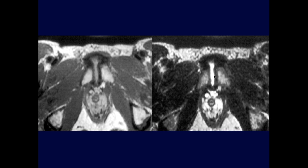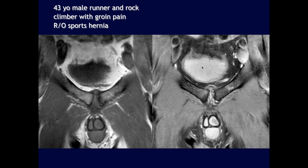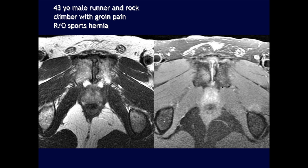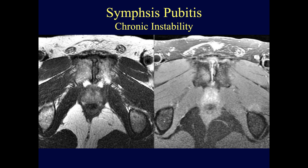Additional chronic examples show fluid within the symphysis pubis with marked thickening of the anterior capsule. A 43-year-old male runner and rock climber with groin pain shows hypertrophy of the symphysis pubis capsule, irregularity, increased signal in the left pubic ramus, and erosive changes — all compatible with symphysitis pubis and chronic instability after injury.